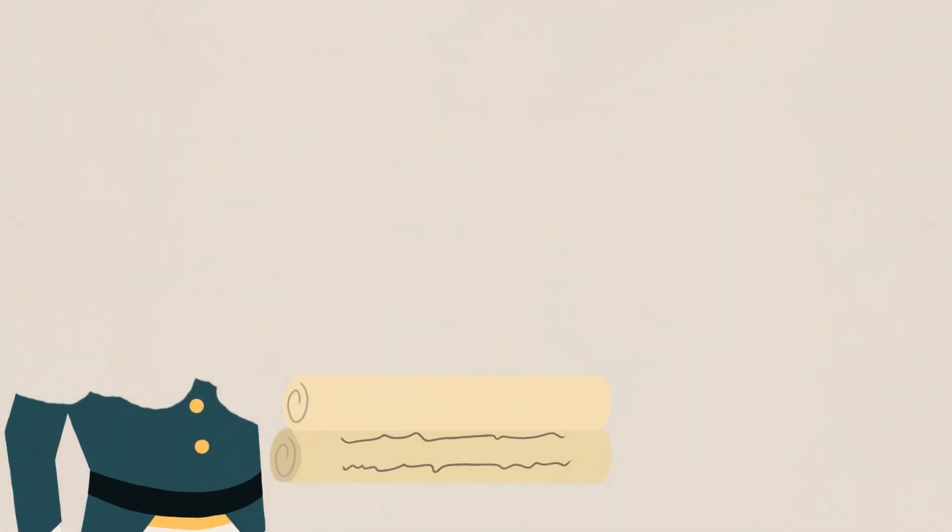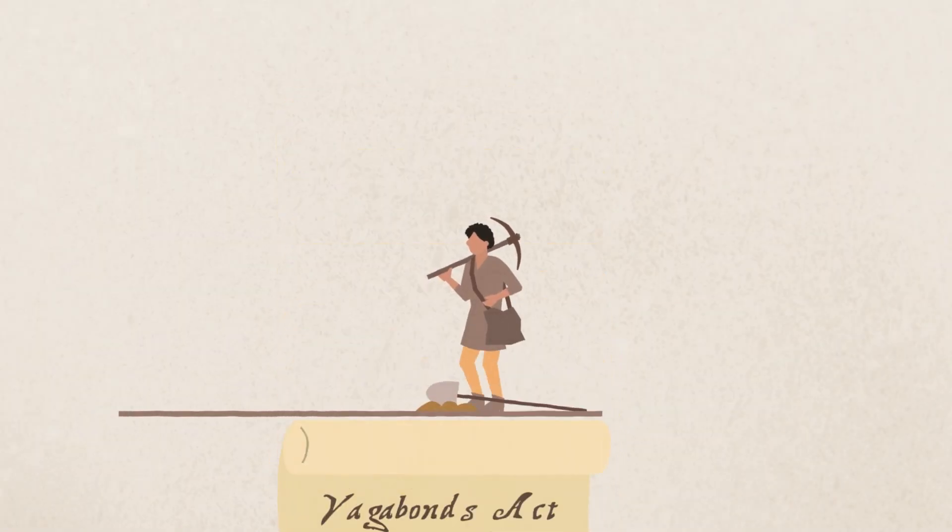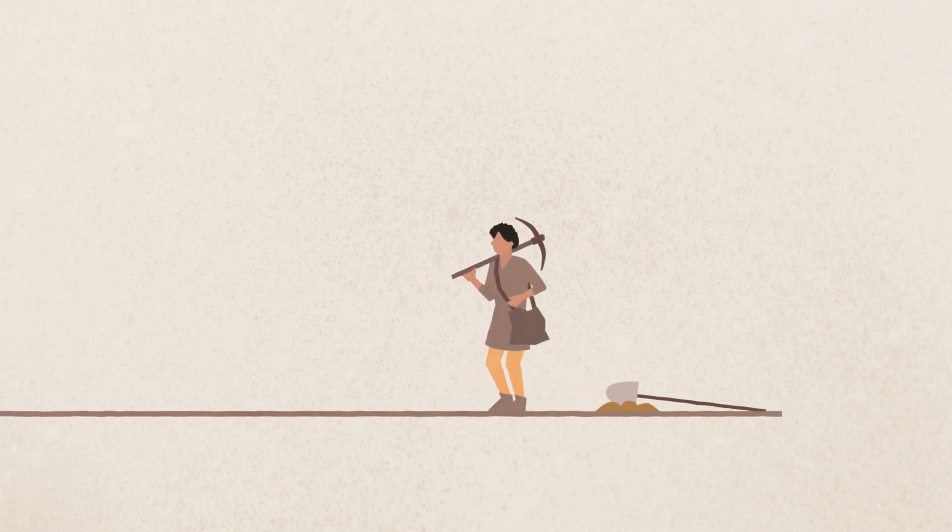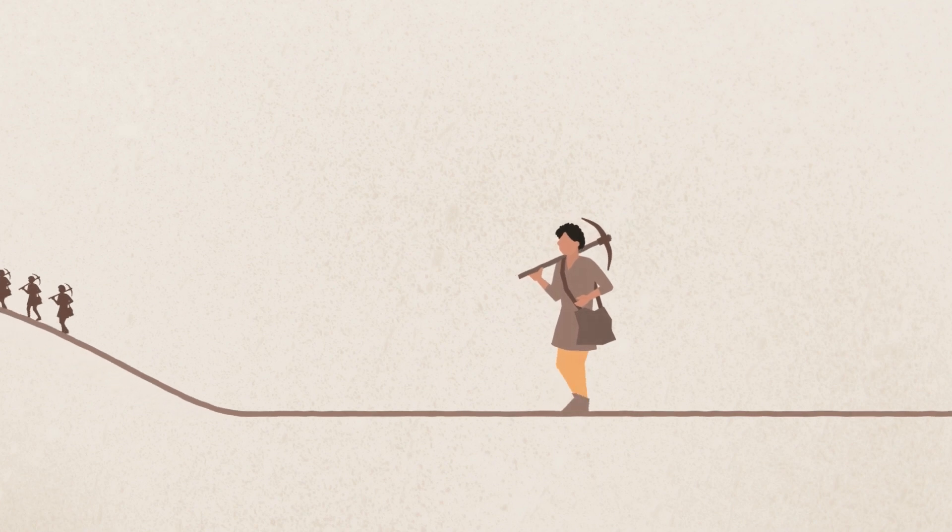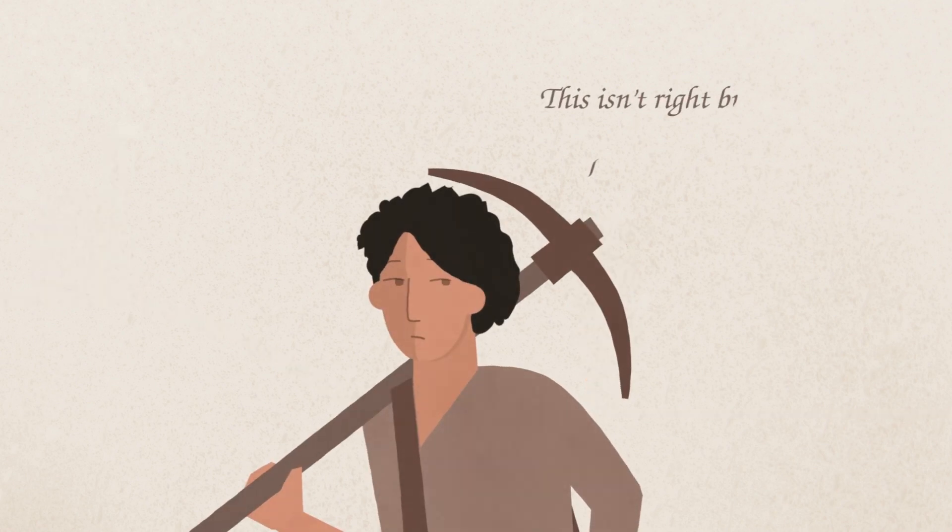In 1572, it became law in Britain that those convicted of begging for the first time would be burned through the ear, and persistent beggars were to be hanged. In response to these punishments, European peasants began to accept the normalcy of jobs, money, and wage labor. To survive, they began organizing their lives around the economy and also stopped trusting their inner voice that told them that this change wasn't normal.